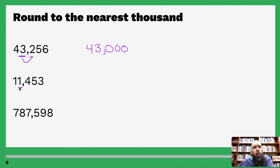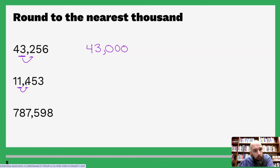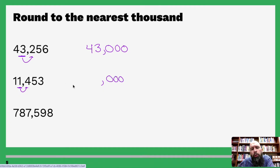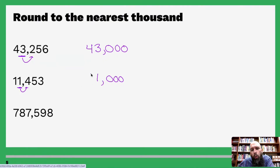Let's look at it again. Here's my thousands — look to the right of it. It is four, which is four or below, so we let it go. We turn all three of these into zeros: one, two, three. Since four is four or below, we leave one as one.